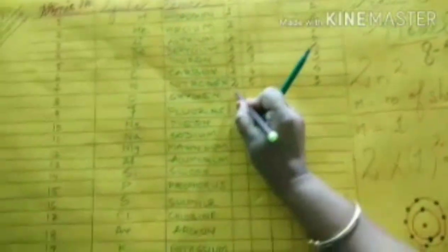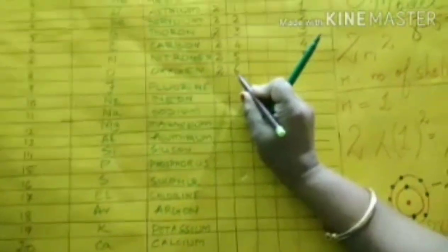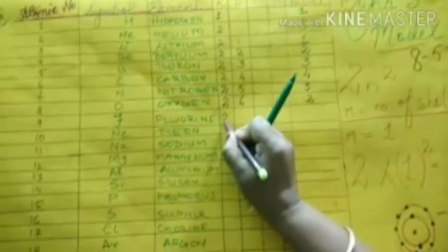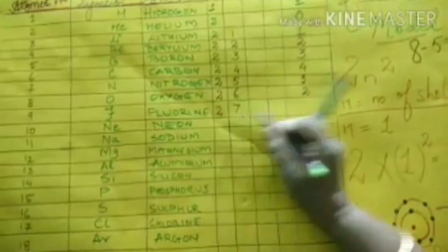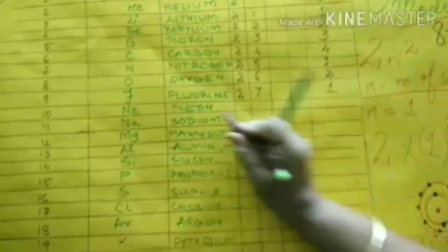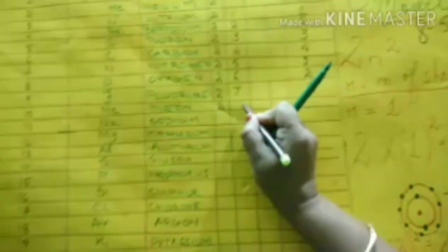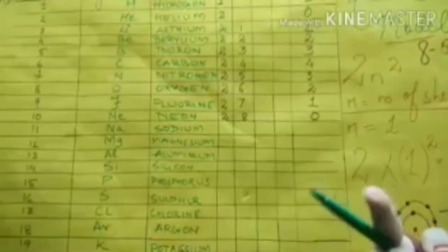Now oxygen 2, 6. You will see more than 4, 8 minus 6, valency 2. Fluorine 2, 7. That is more than 4, 8 minus 7, 1. Neon, it's 10. So 2, first shell complete, second shell 8, complete. It will not take more than 8. So valency will be 0. Very good children. I hope now you will understand. Automatically you will be answering now.